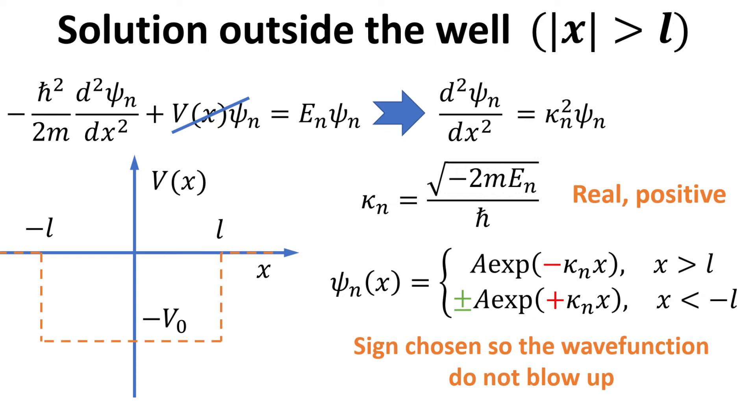As we discussed earlier, the symmetry of the problem implies that ψn can be an even or odd function. This is reflected by the plus minus sign denoted in green.